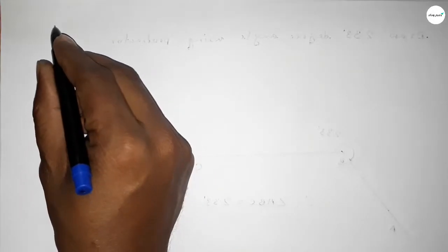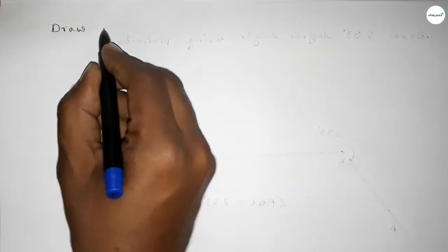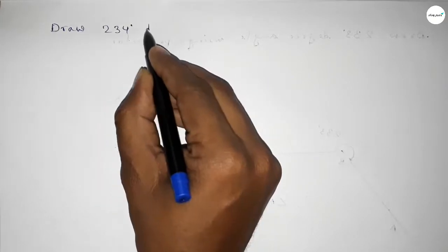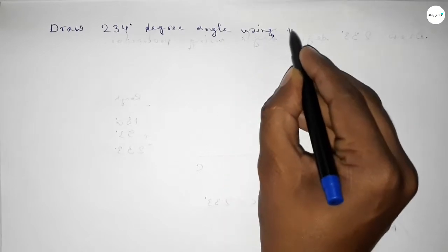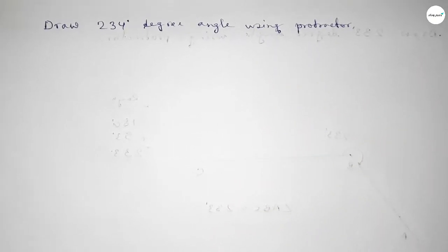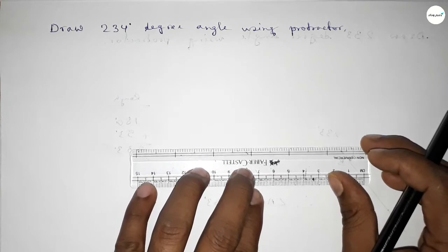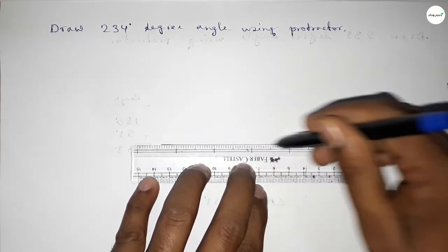Hi everyone, welcome to SI Chair Classes. Today in this video we have to draw a 234 degree angle by using a protractor. So let's start the video. First of all, we have to draw here a straight line of any length.